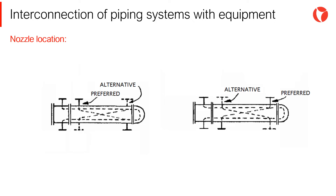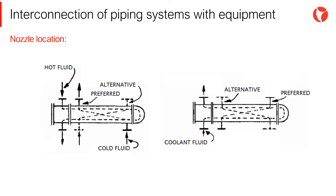The location of nozzles in heat exchangers generally complies with the following rules. The fluid to be heated generally enters the equipment at the bottom and exits at the top, circulating through the shell side or the tube side. The opposite occurs with the fluid to be cooled, which generally enters the equipment from the top, circulating through the tube side or the shell side. Nozzles are arranged so that fluids passing through the exchanger are in countercurrent, so that one fluid is heated from the bottom up and the other fluid cools from the top down.